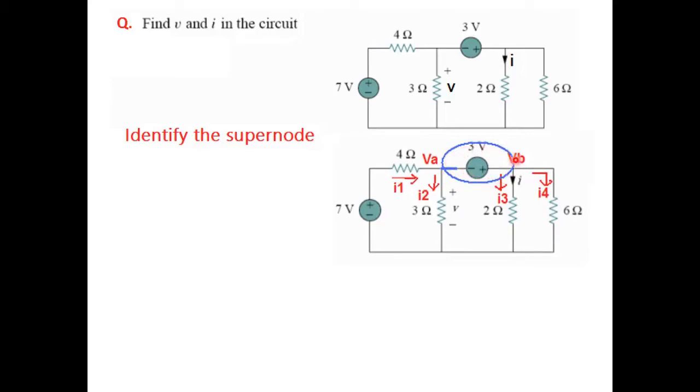And as we have learnt, we will write the KCL equation again. So we take current directions arbitrarily. I have taken I1 entering, I2 leaving, I3 leaving, and I4 leaving. So the KCL equation is I1 entering equal to I2 plus I3 plus I4.